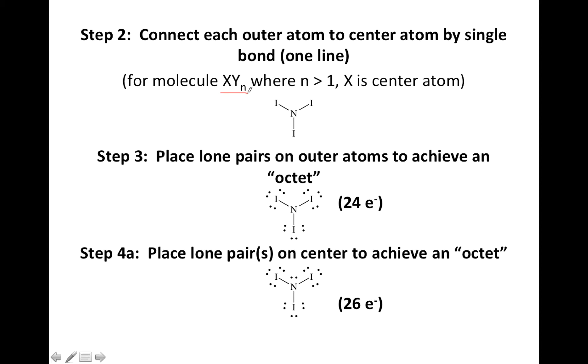you're going to want to put the single atom X in the center and then the element that there's more than one of around the outside. In this case it was NI3, so we put the N in the center and the three iodines around it.